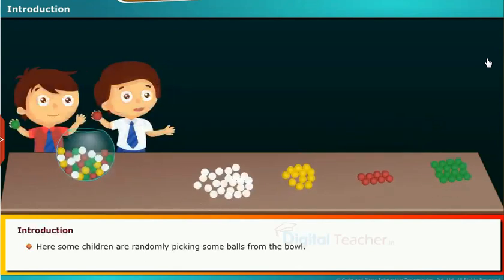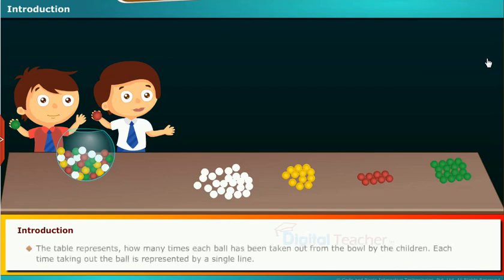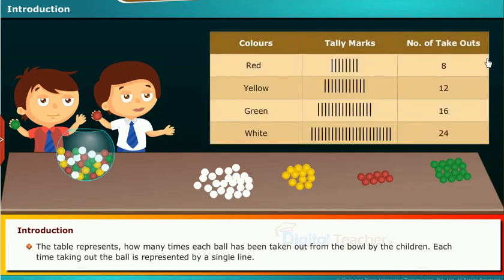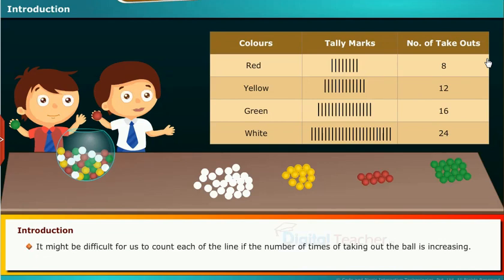Here some children are randomly picking some balls from the bowl. The table represents how many times each ball has been taken out from the bowl by the children. Each time taking out the ball is represented by a single line. It might be difficult for us to count each of the lines if the number of times of taking out the ball is increasing.